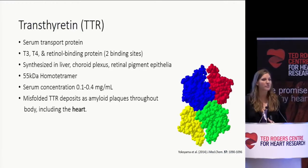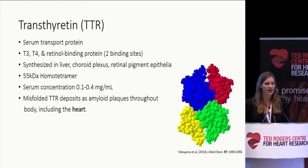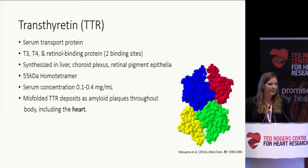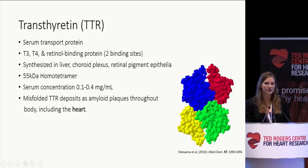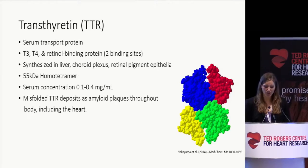The main culprit of this disease is a protein called transthyretin, TTR. TTR is a serum transport protein involved in transporting thyroid hormones T3 and T4 throughout the body, as well as vitamin A via retinal binding protein. It's primarily synthesized in the liver, and it's a 55 kilodalton homotetramer, meaning it's composed of four identical subunits, as indicated in the space-filled molecular diagram. It has a high serum concentration of 0.1 to 0.4 mg per ml, and unfortunately this protein can misfold and deposit as amyloid plaques throughout the body, including the heart.